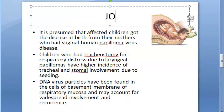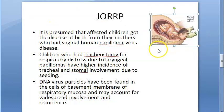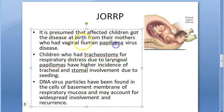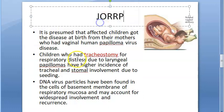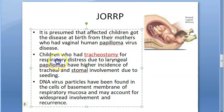How does the HPV infection come to the baby? It is usually through vaginal delivery. The firstborn child is more likely to get the virus because it stays longer in the birth canal. It can also occur in children who had a tracheostomy for respiratory distress due to laryngeal papilloma.